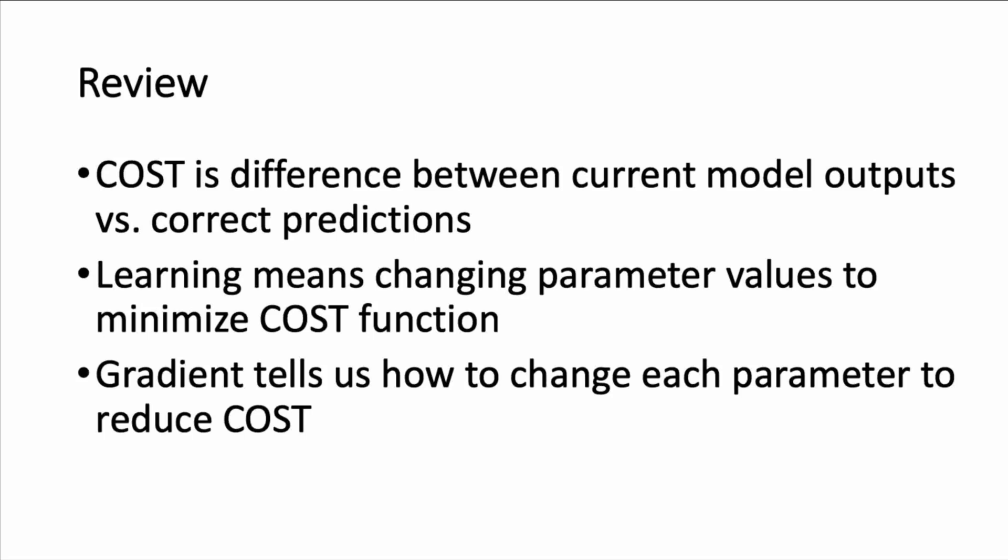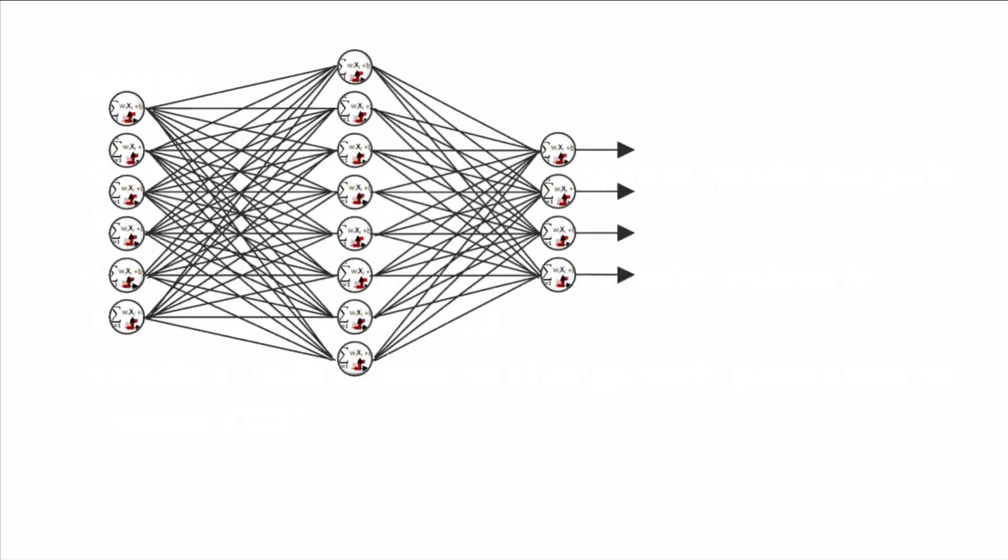We're going to go through how we can use this gradient to update the neural network as it learns. But before showing how neural networks update their parameters, I want to first look at how all the parameters in a multilayer neural network affect the output by stepping through the computations of a multilayer network.